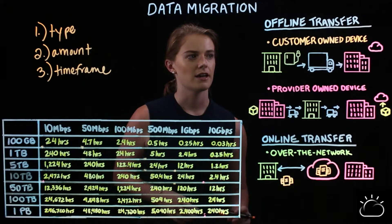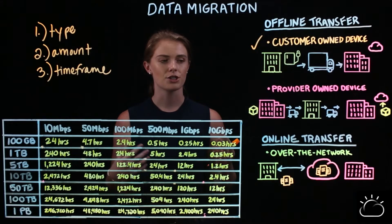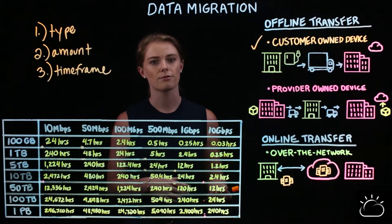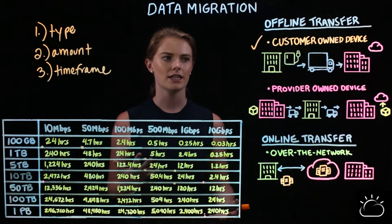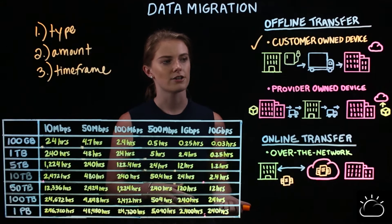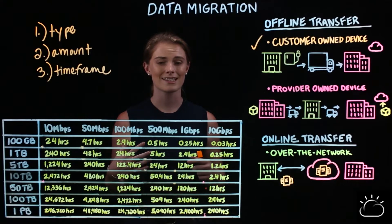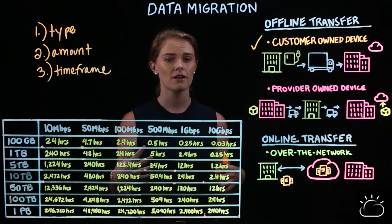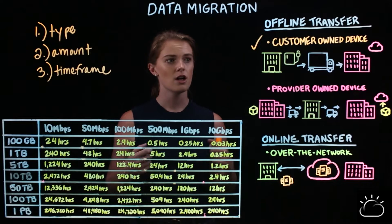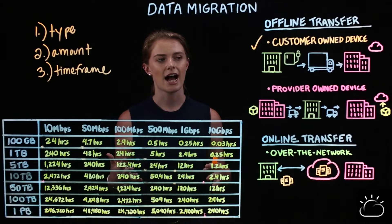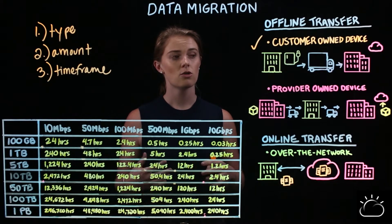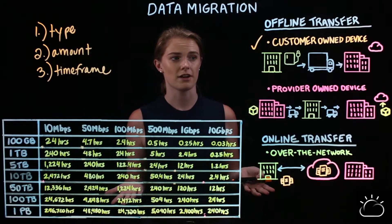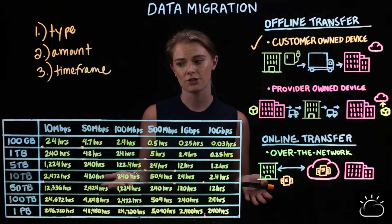The first option is a customer-owned device. That looks like you sending in your own piece of hardware — whether it's a USB stick, external hard drive, CD, DVD, or something like that — to a cloud provider's data center for connection. Once that device is mounted, depending on the cloud provider, either you will remotely control the data transfer or they will initiate the transfer on your behalf. Once the transfer is complete, they'll ship the device back to you, or some providers offer to destroy the device on your behalf.